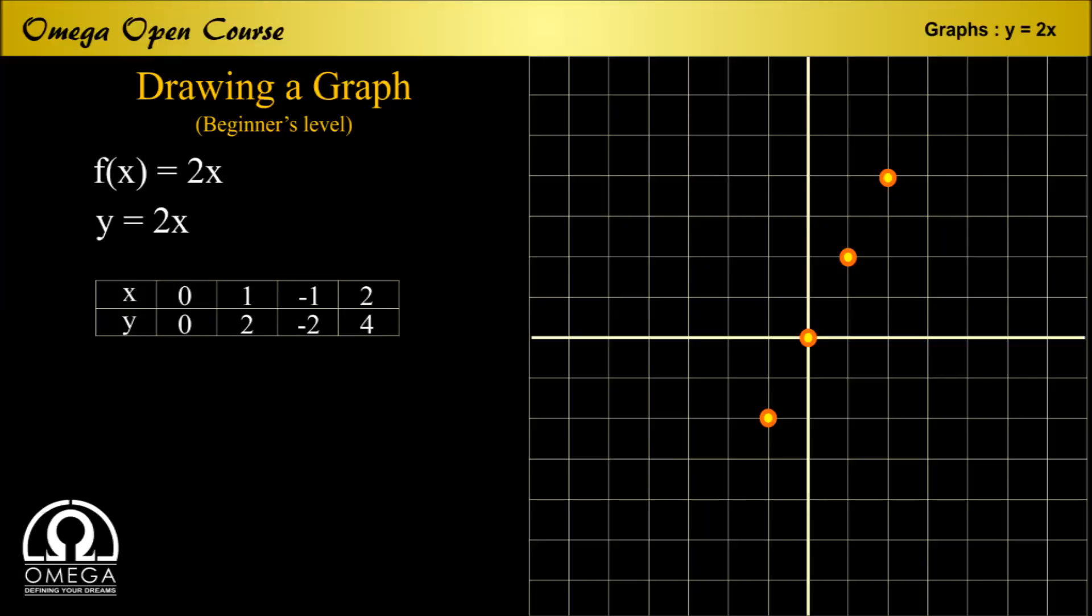Thus we get 4 coordinates on our graph paper and we can easily obtain our graph by joining these points. We all understand that the above function is linear and therefore we get a straight line as our graph.